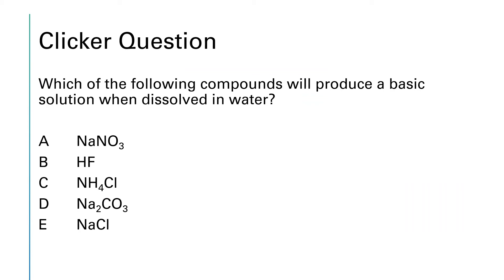This question asks us to determine which compound will make a basic solution when dissolved in water. We're looking for a base or a basic salt. HF jumps out right away as an acid — it will not be a base. The remaining compounds look like salts, so we need to determine what type of acid and base reacted to produce them. To make a basic solution, we need the combination of a strong base plus a weak acid.